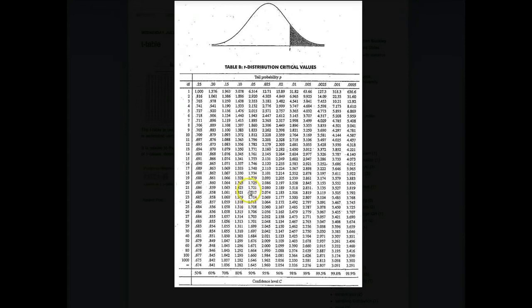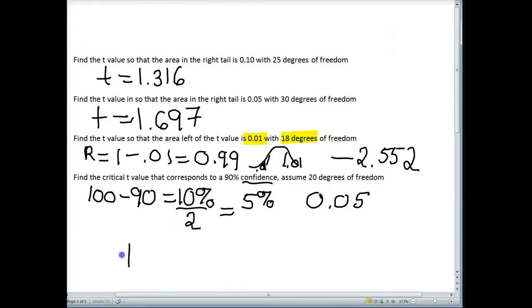Excuse me, 20 degrees of freedom. I was wondering why the numbers weren't working out. Right there we go, 1.725. And that would be my t-value.